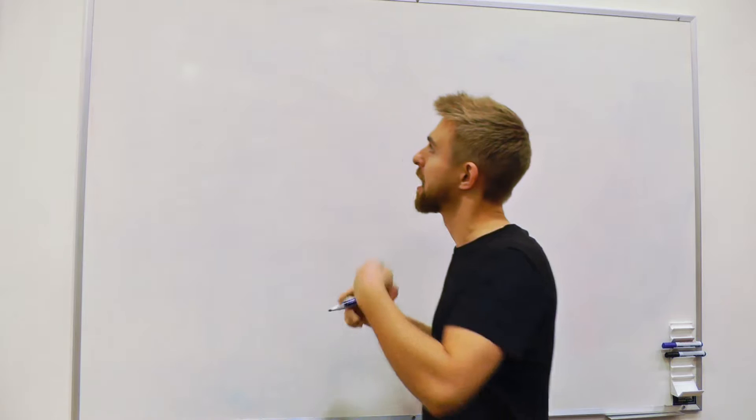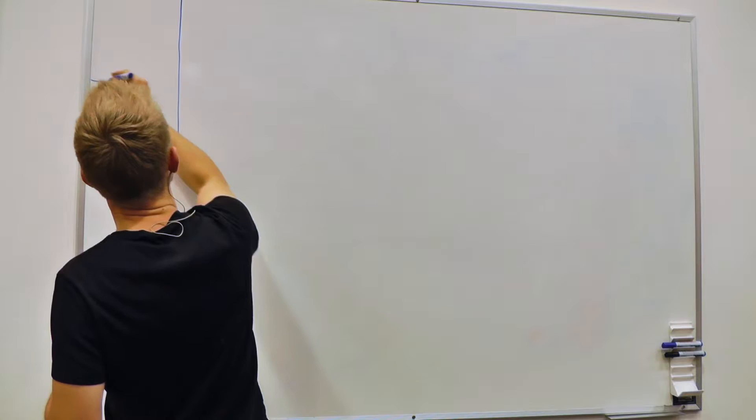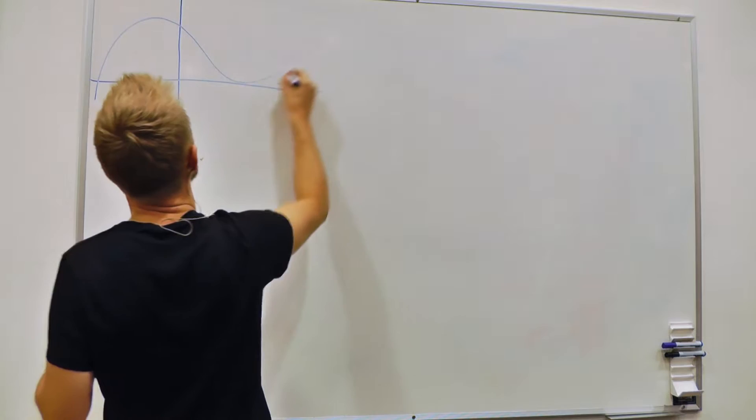So what we're going to do is work out together how we go about calculating the coefficients in front of each of these powers of x. We're going to start by drawing a sort of arbitrary function, which we're going to use to help us understand what's going on.